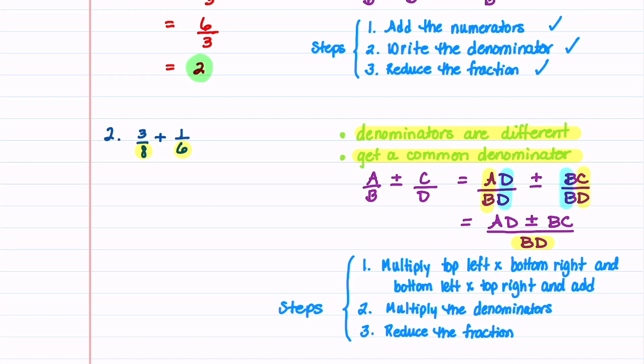Let's do this for problem number 2. We'll take 3 8ths, and we'll multiply it by 6 over 6, and then we'll take 1 6th, and we'll multiply that by 8 over 8.